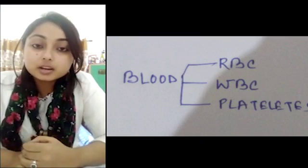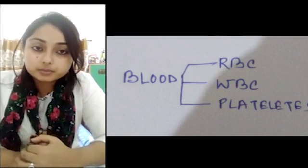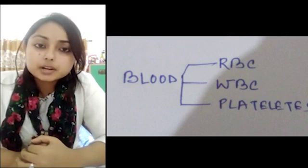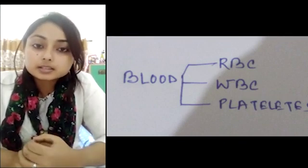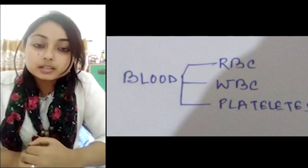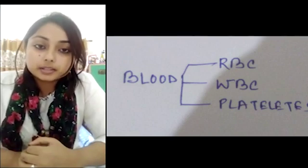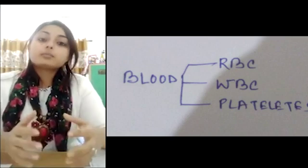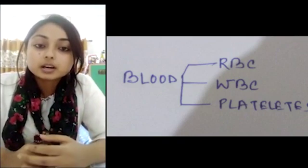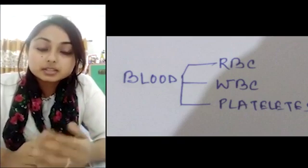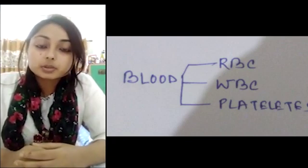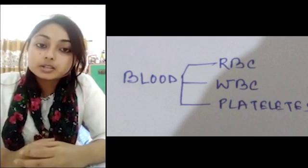All these cells have their own function. RBC — red blood cells — are responsible for carrying oxygen. White blood cells form the main constituent of our immune system and they fight against diseases that intrude our system. Platelets are responsible for blood clotting.